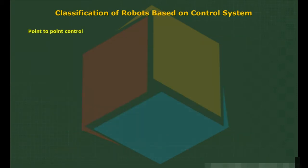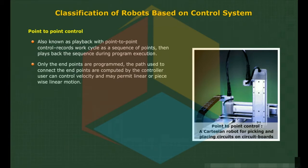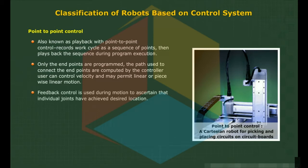Point-to-Point Control, also known as playback with point-to-point control, records the work cycle as a sequence of points and then plays back the sequence during program execution. Only the end points are programmed; the path used to connect them is computed by the controller. The user can control velocity, and the system may permit linear or piecewise linear motion. Feedback control is used during motion to ascertain that individual joints have achieved the desired location.